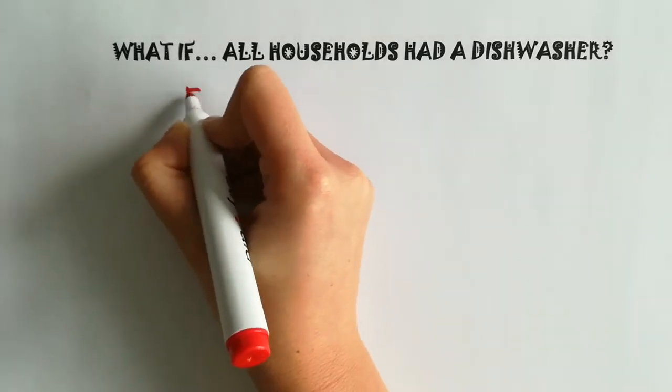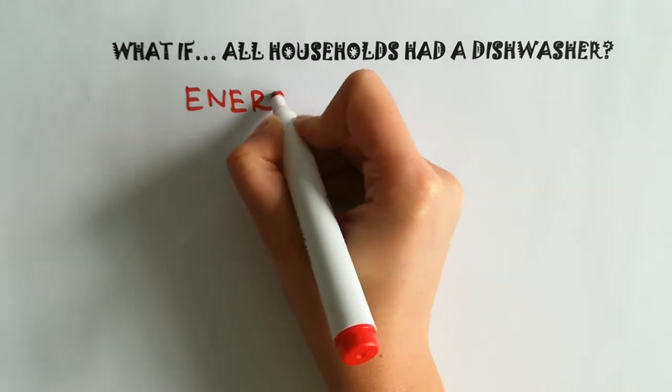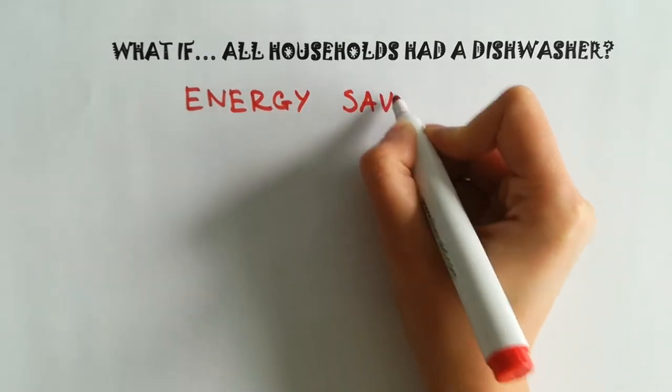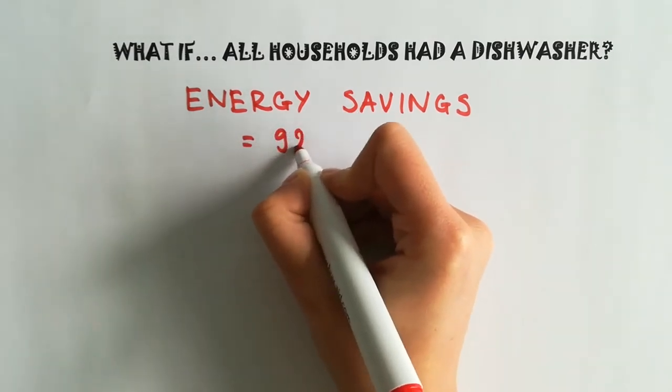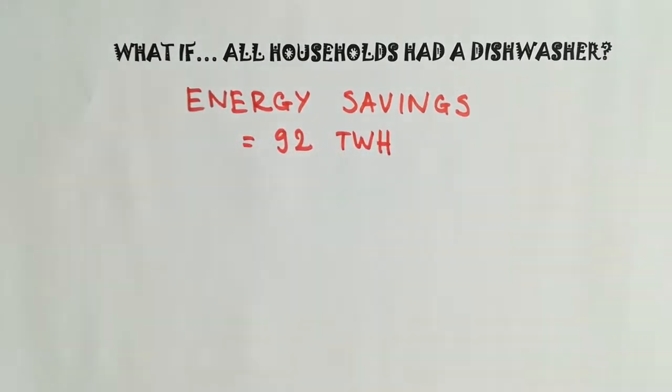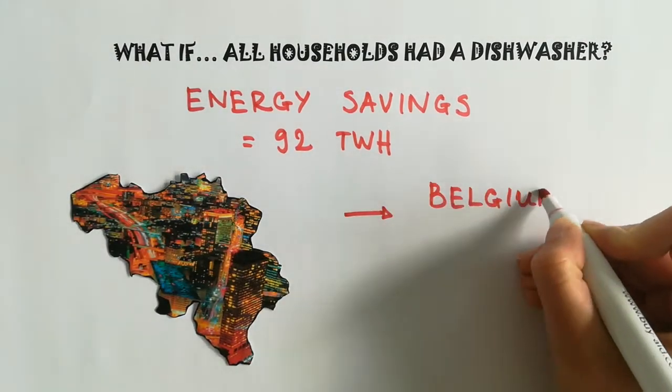In terms of energy, the potential savings are just as great. If all EU households used a dishwasher, Europe would save 92 TWh of energy each year. That's more than Belgium's annual energy consumption.